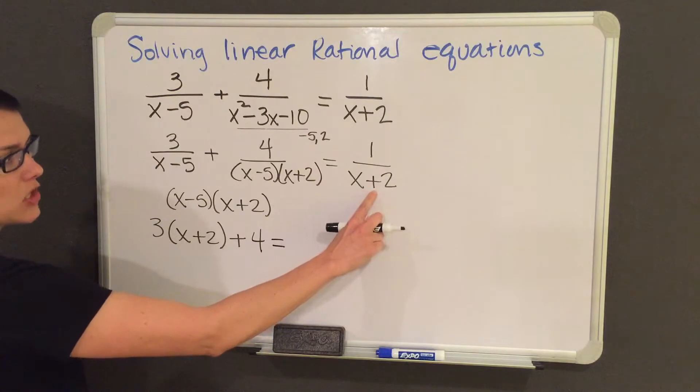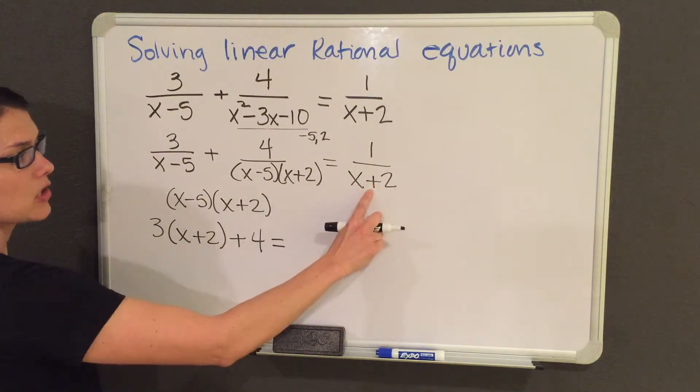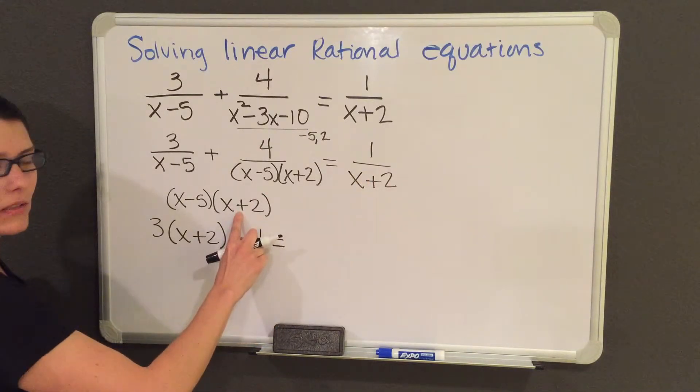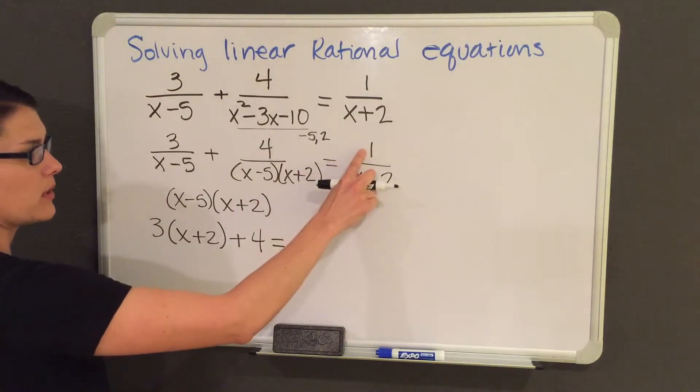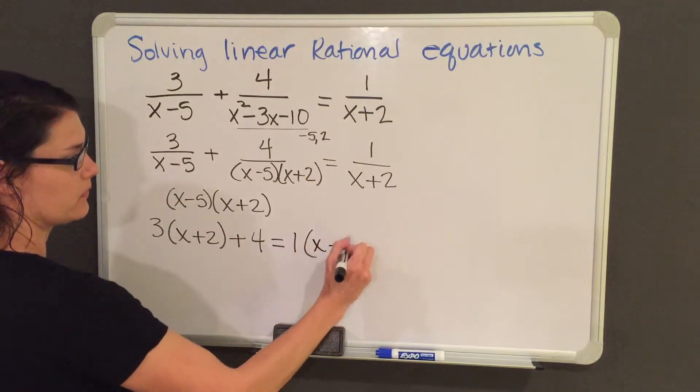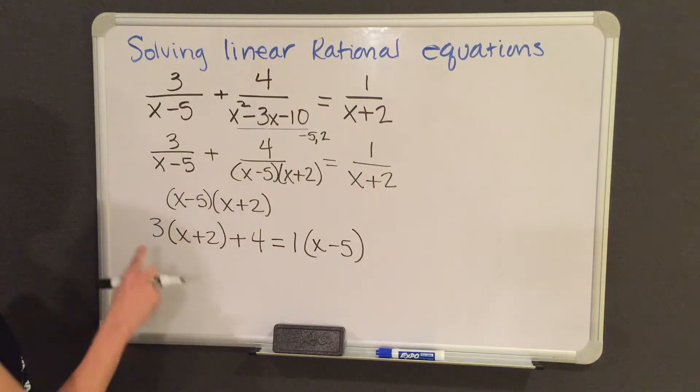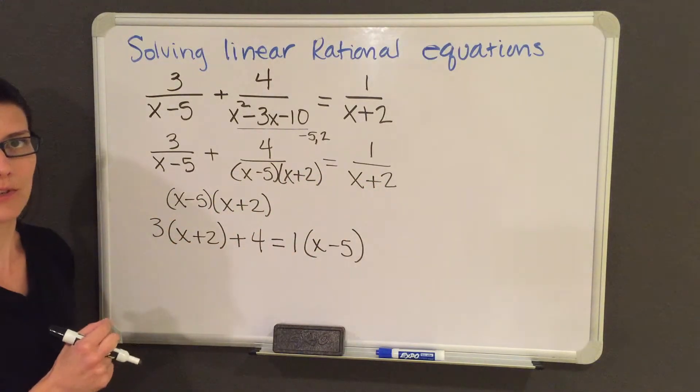And then on my last term, when I multiply the common denominator to my last term, the x plus 2 factors cancel out. And all I am left with is 1 and my x minus 5. After you multiply everything by your common denominator, you will not have any fractions left over.